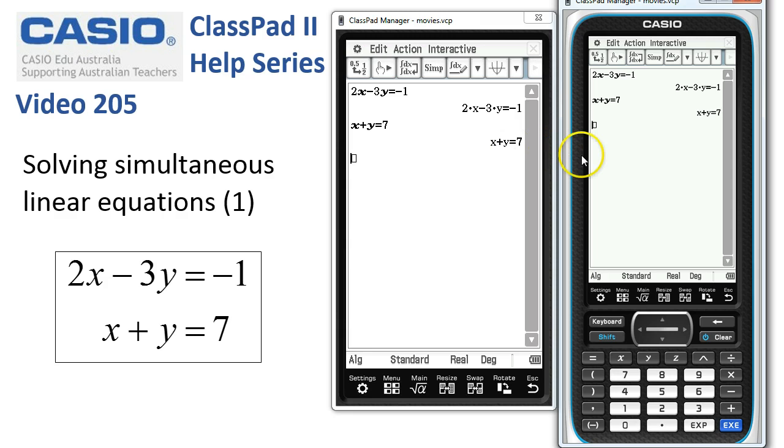Now, the pencil and paper method says we'll probably take this equation and add to it three of these, which means we would eliminate the y's. So let's try that method. Here we go. We'll take the first equation and add to it...